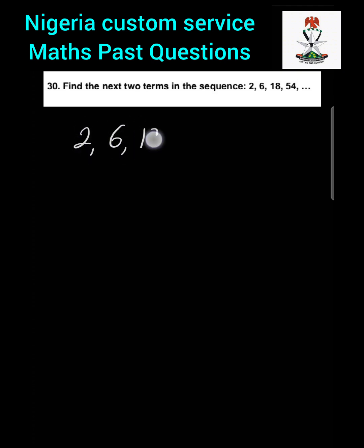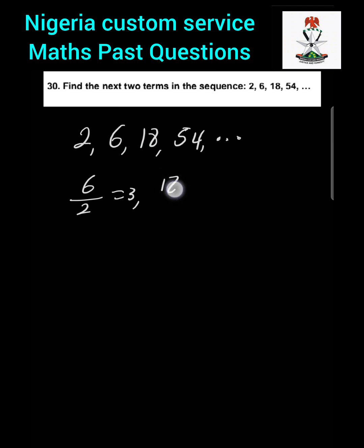Question 30: Find the next two terms in the sequence 2, 6, 18, 54, and so on. To find the next terms, we look at the ratio between consecutive terms: 6 divided by 2 is 3, 18 divided by 6 is 3, and 54 divided by 18 is 3. The common ratio is 3, meaning each term is multiplied by 3: 2×3=6, 6×3=18, 18×3=54.